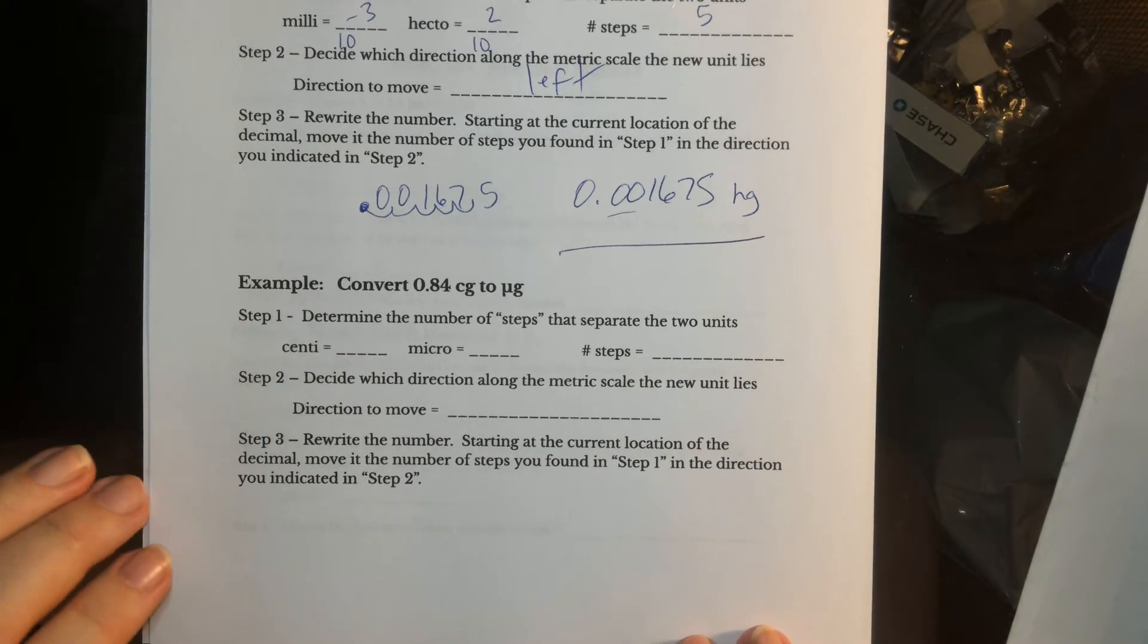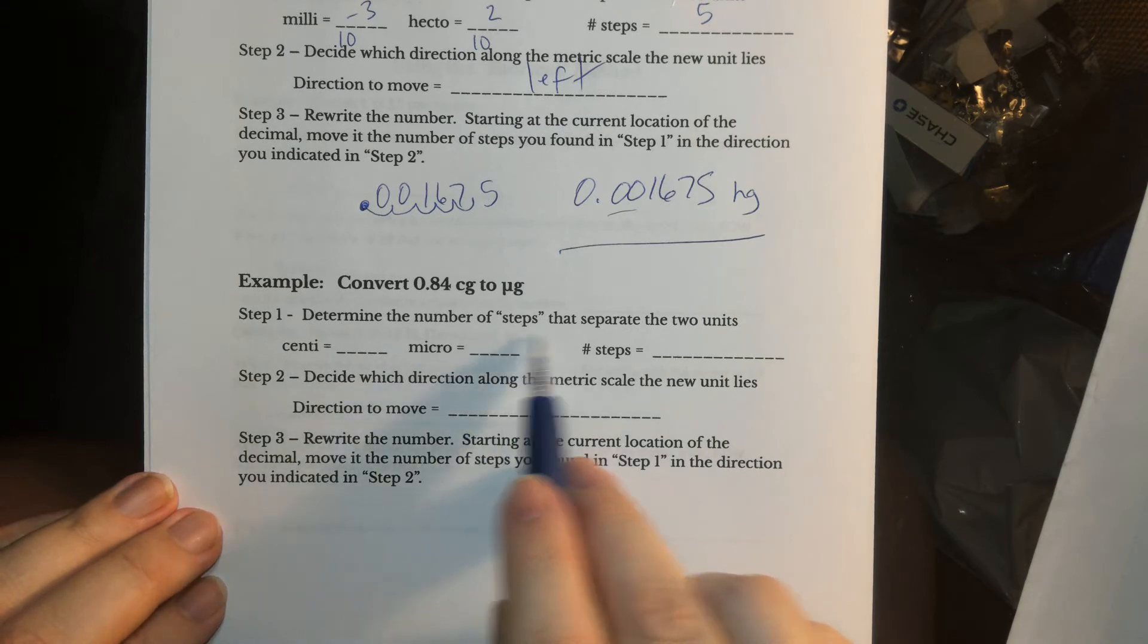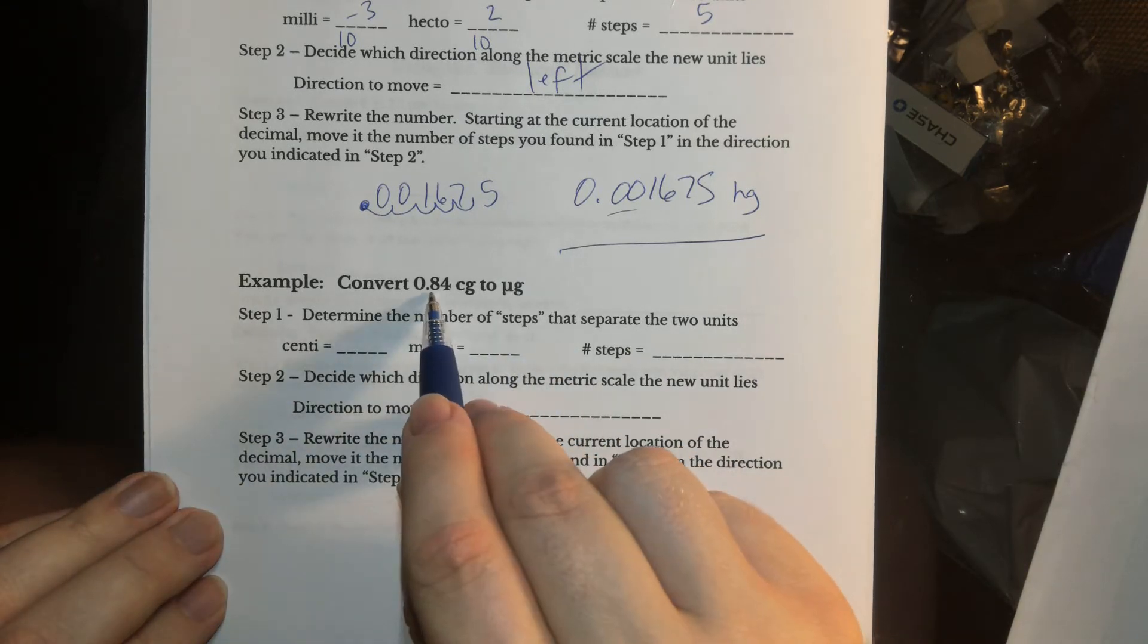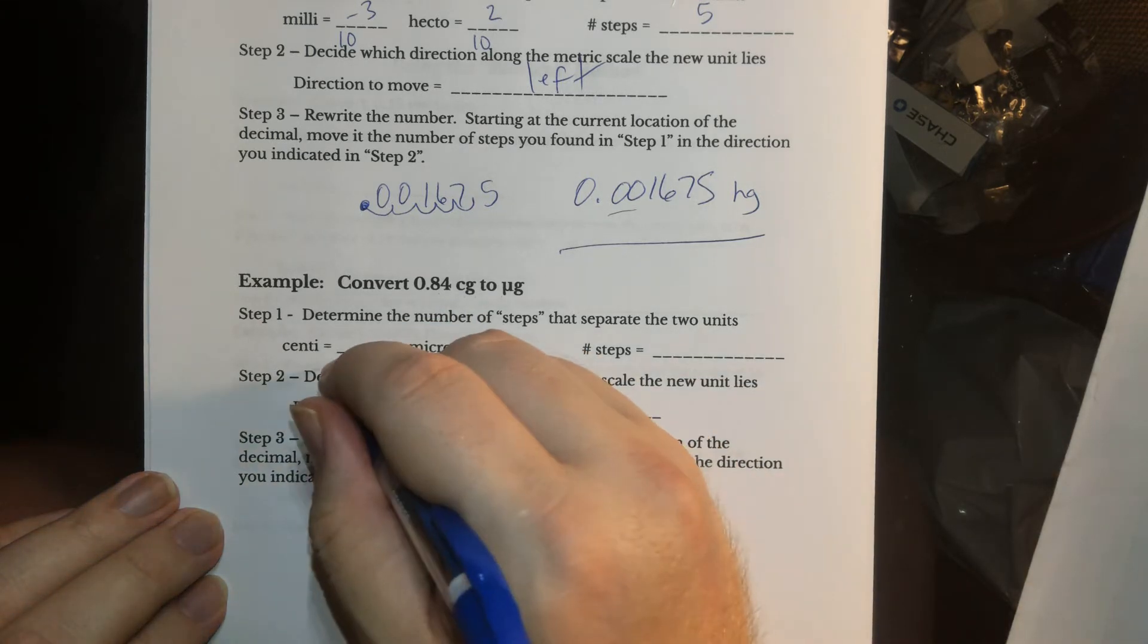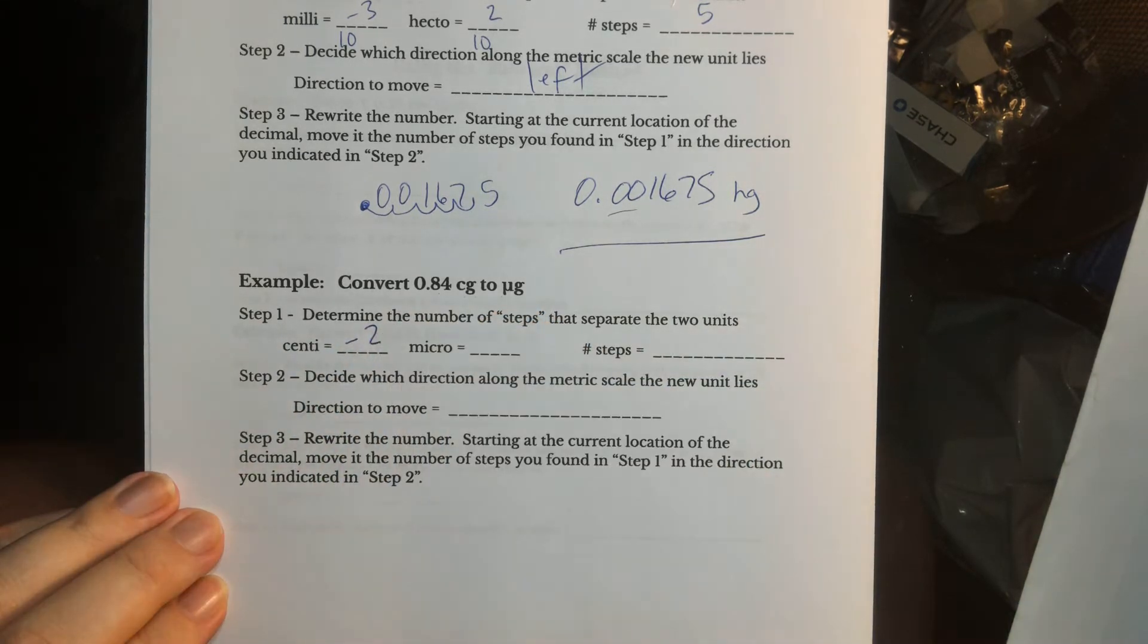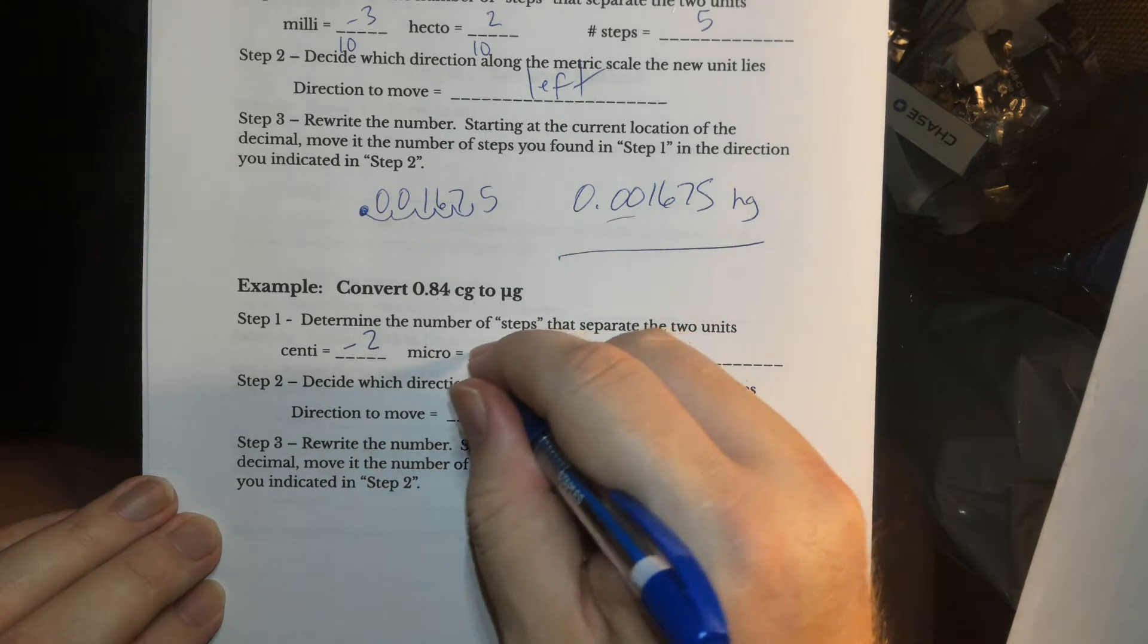All right, so let's real quickly go to the next example. The number of steps that separate, in this case, we're going from 0.84 centigrams to micrograms. All right, so centi is minus two, I just want that exponent, micro is minus six.